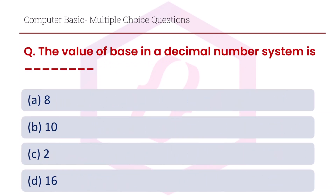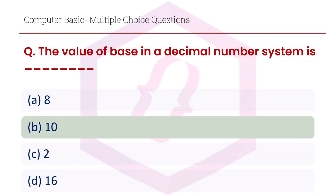The value of base in a decimal number system is: option A 8, option B 10, option C 2, option D 16. The right answer is option B, 10.